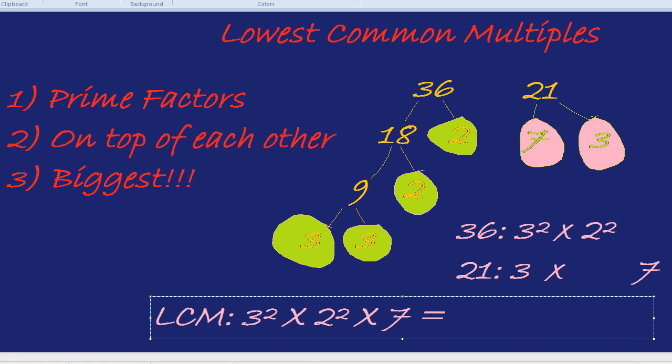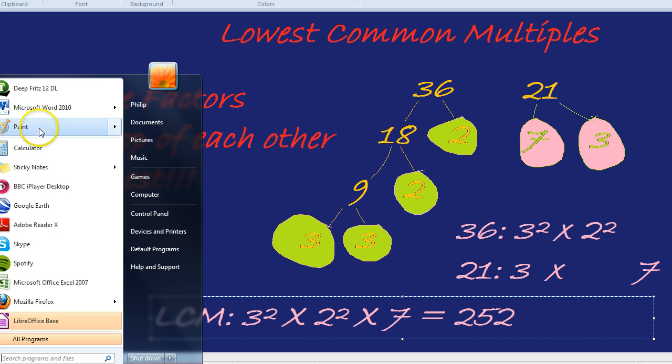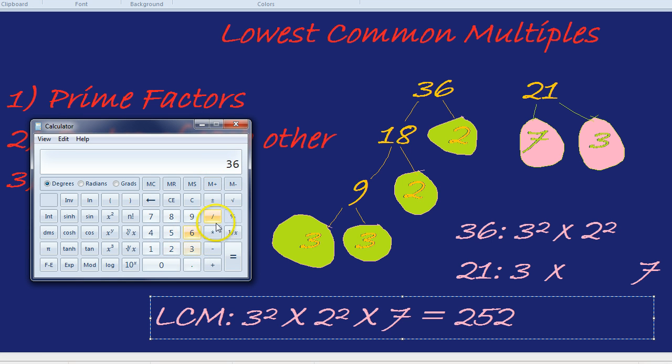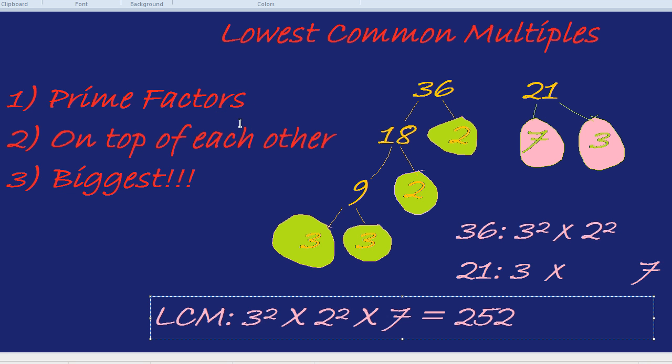All we need to do now is multiply those numbers out to find the mystery number. 3 squared is 9, 2 squared is 4, 9 times 4 is 36, 36 times 7 is 252. So the lowest common multiple of 36 and 21 is 252.